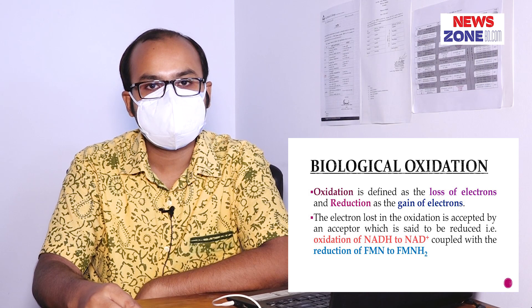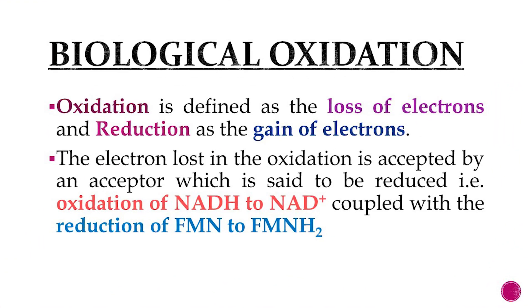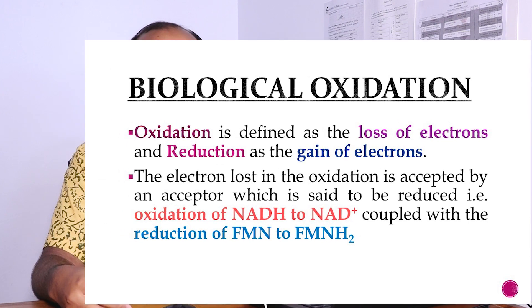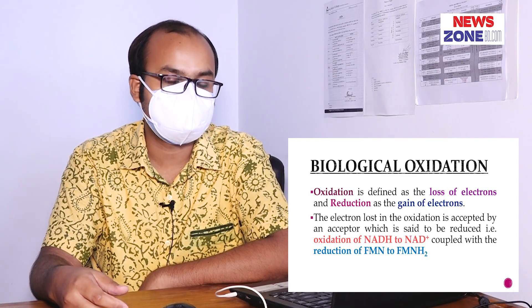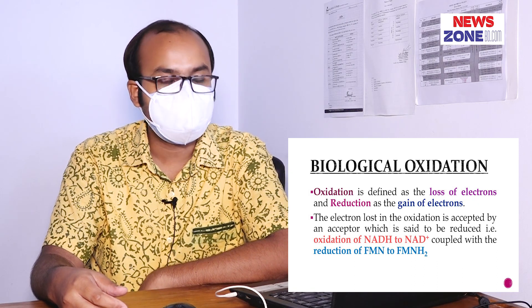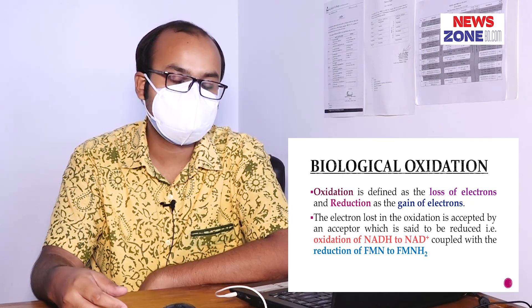Let's begin the main session. First we have to know what is oxidation and what is reduction. These two important reactions belong to the whole chemical reaction which is collectively called biological oxidation. Oxidation is the basic chemical process by which electrons are removed from biomolecules, and reduction is the process by which another biomolecule receives those lost electrons — that is, accepts electrons. So oxidation is defined as the loss of electrons and reduction is the gain of electrons.